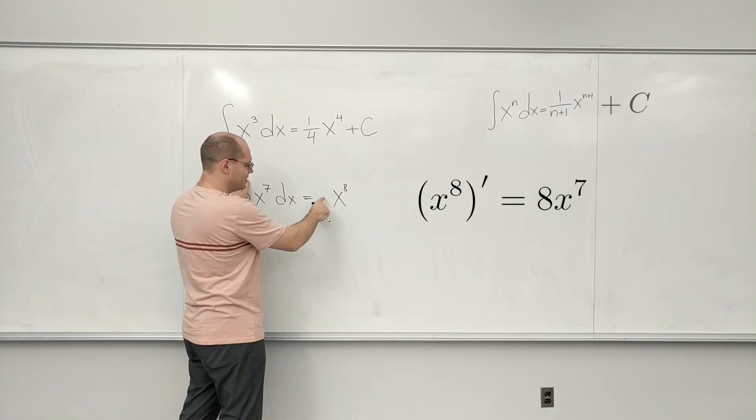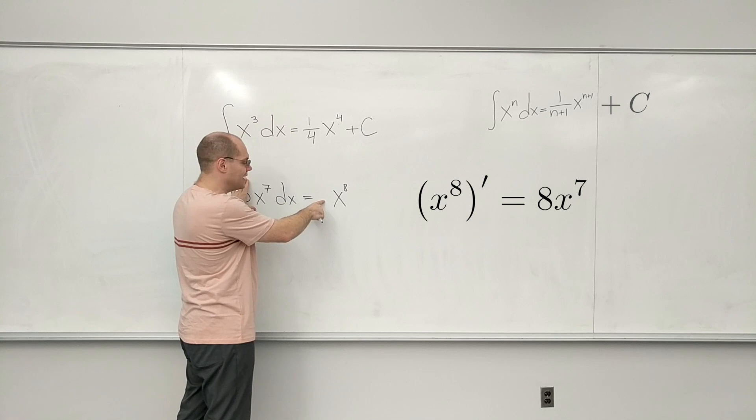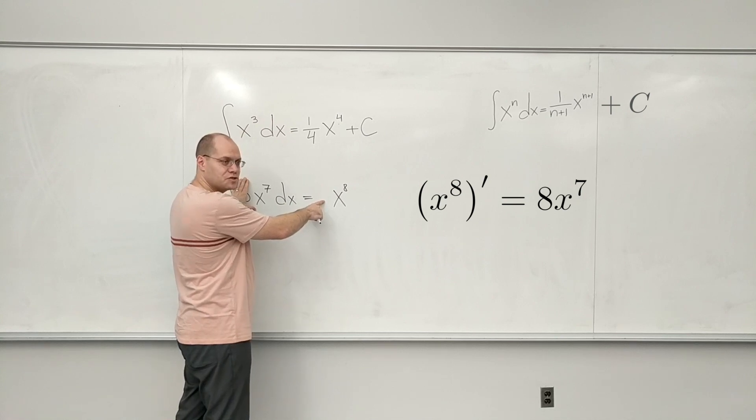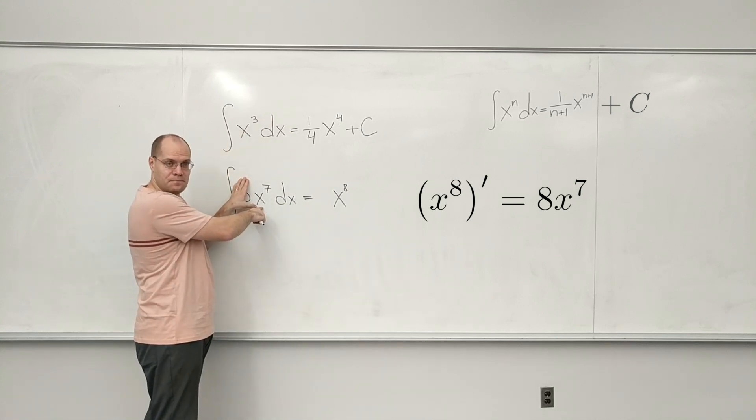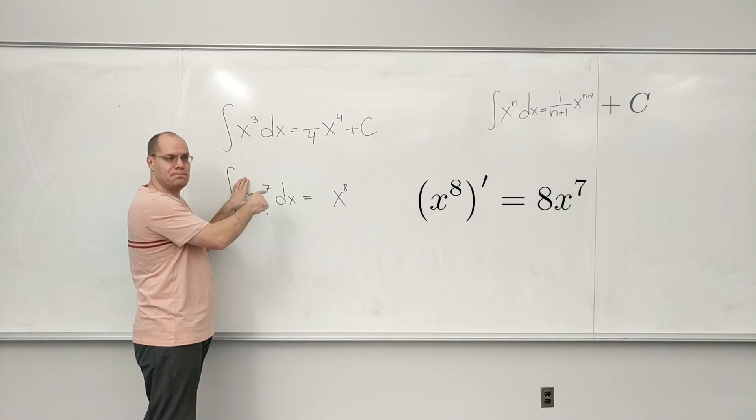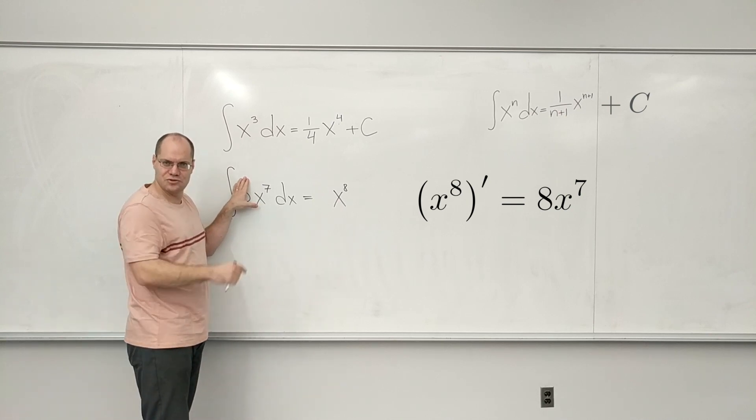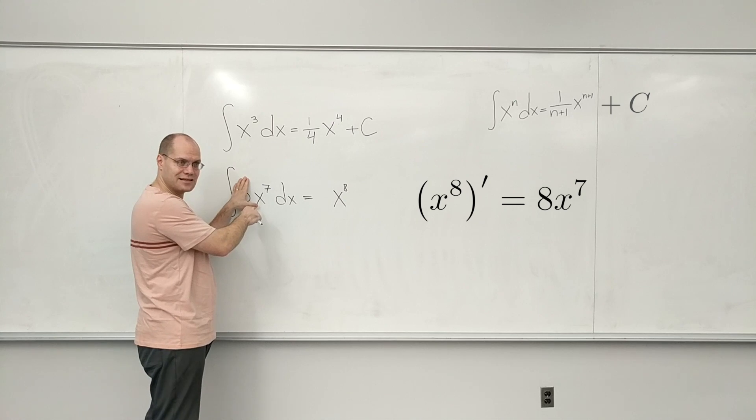So the derivative of this is 8 times x to the 7th. So I got 8 times what I was aiming for. So I have to make up for it by putting in 1/8 to nail x to the 7th exactly.